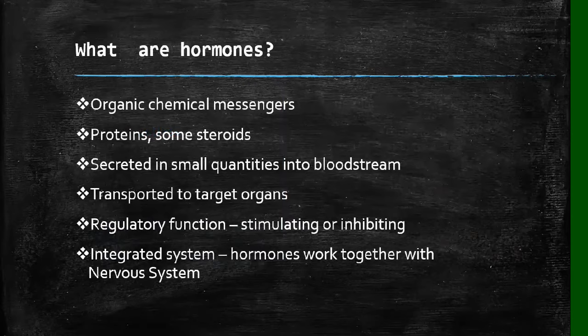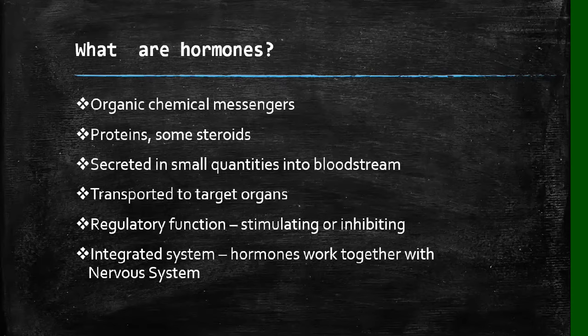It's important to understand the characteristics or properties of hormones. Hormones are organic chemical messengers. By organic, we mean they consist of hydrogen, oxygen, and carbon atoms. Most of them are proteins, and some are steroids. They are secreted in small quantities into the bloodstream, transported to target organs, and they play a regulatory function by stimulating or inhibiting something. When something is stimulated, it means it is activated to perform. If it's inhibited, it means it is blocked or stopped from performing.